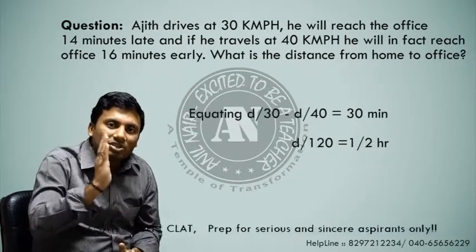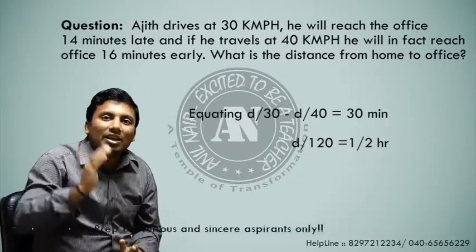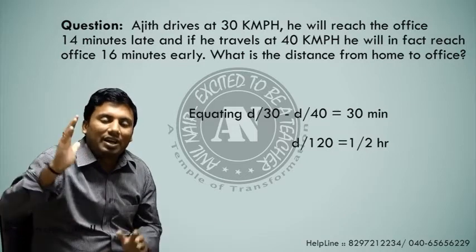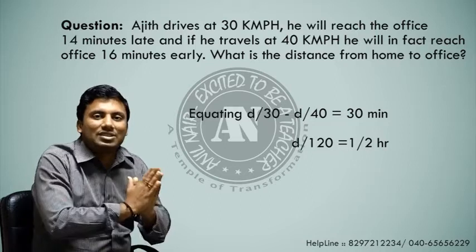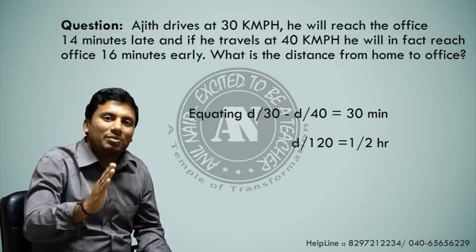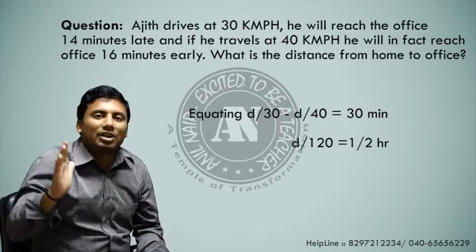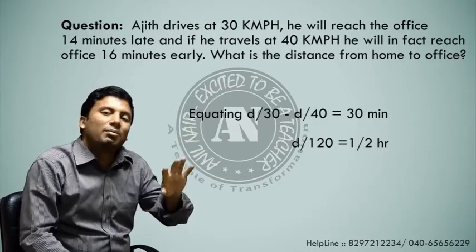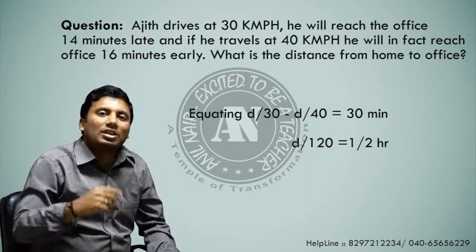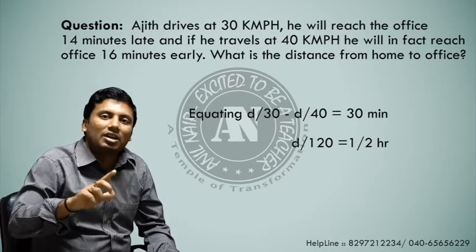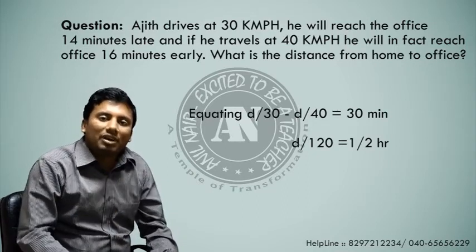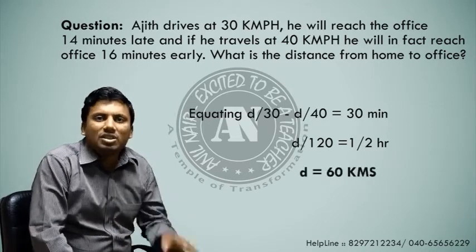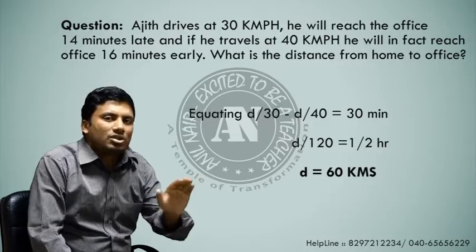Why 30 minutes? 8 to 8:14 is 14 minutes, and 7:44 to 8 is 16 minutes, totalling 30 minutes. So d/30 minus d/40 equals 30 minutes, which is 1/2 of an hour. Solving this gives us d/60 — and we get the answer. This is the traditional method to solve the question.